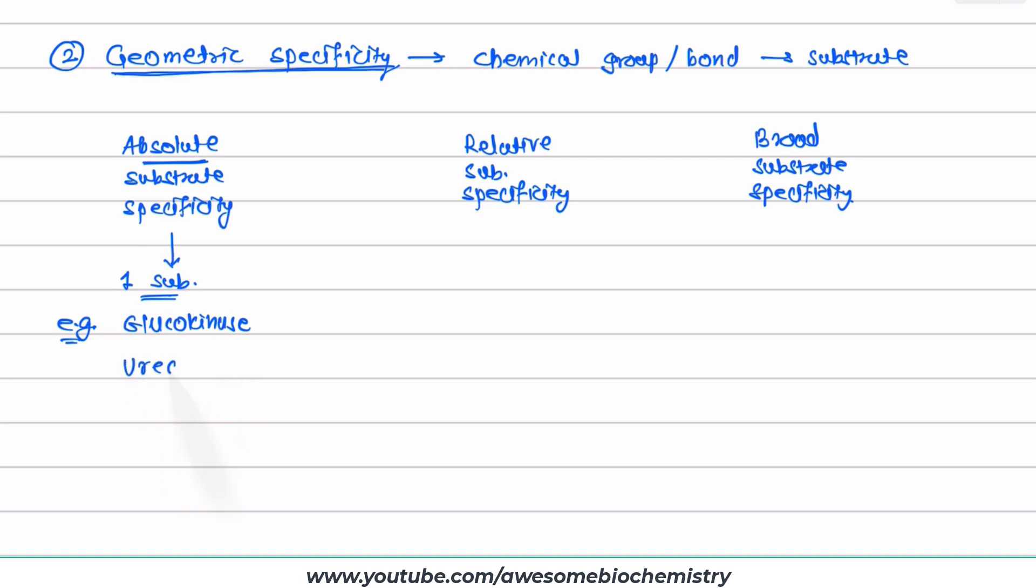The second example is urease. This enzyme acts only on urea, no any other substrate. So their range of specificity is very narrow. And that's why we call it absolute substrate specificity.